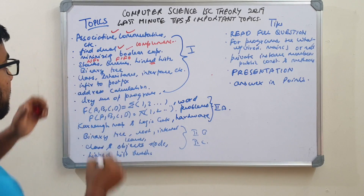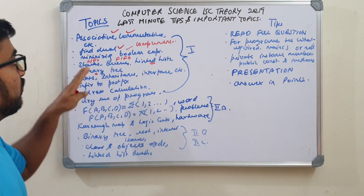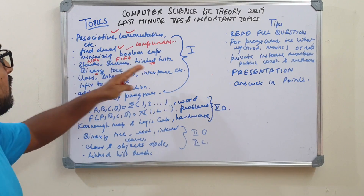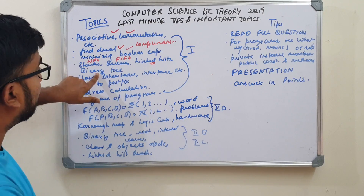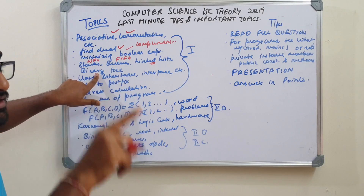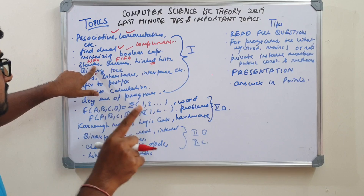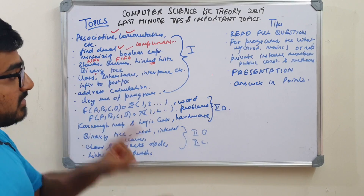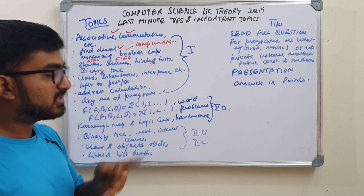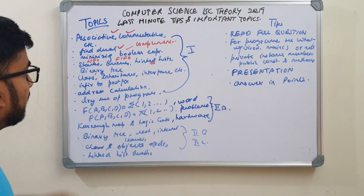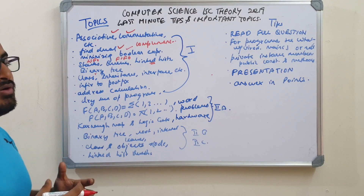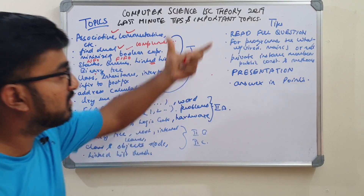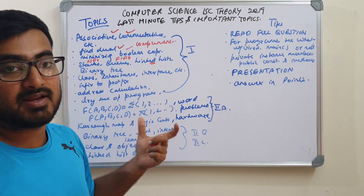About linked lists — and they may also ask about binary trees. For all these data structures, first state that they are data structures that can hold data of any data type. Then write the characteristics: for example, a binary tree is made up of nodes, each node has data and a maximum of two children. The examiner should understand what you are saying, so use as many technical terms as possible.